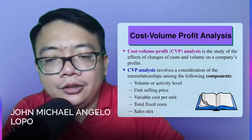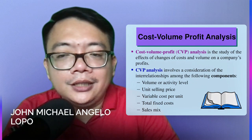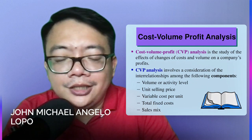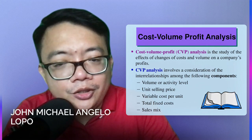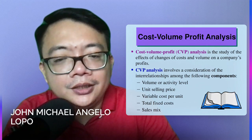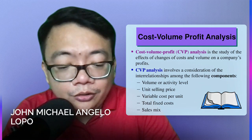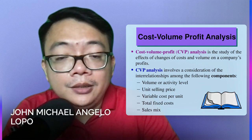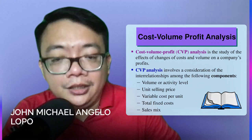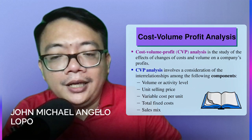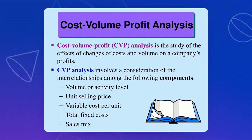Please take note of the variable cost per unit and your total fixed cost. When you say about variable cost per unit and total fixed cost, it will remain the same regardless of the activity level. That's why the variable cost per unit is always given.